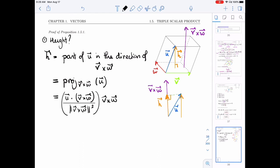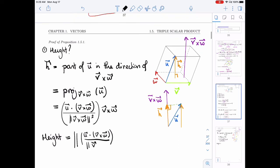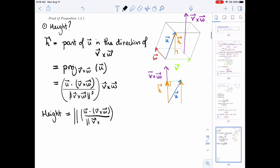This entire thing in front is a constant. All right. Excellent. Now we're ready to find what the length of the h vector is. That's what we want as the height. So that's going to be the length of h. So the length of u dot v cross w length of v cross w squared v cross w.